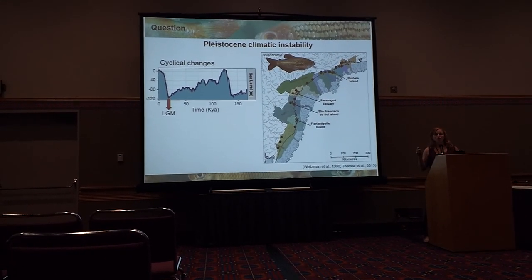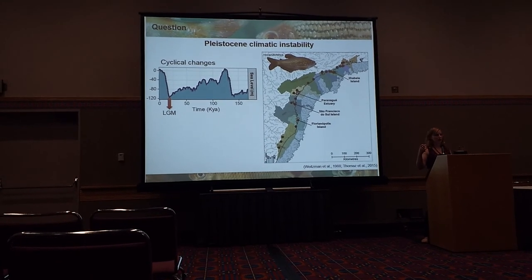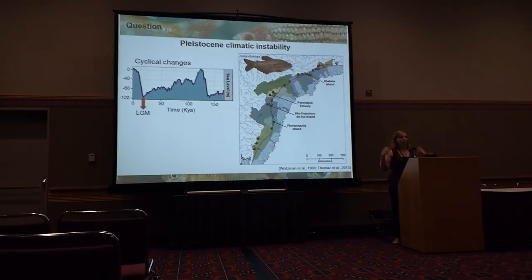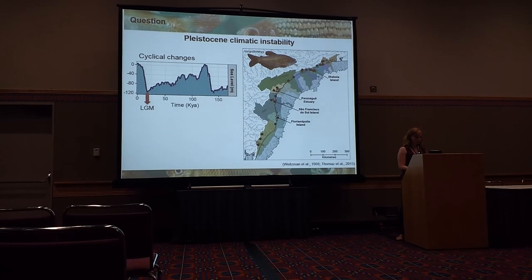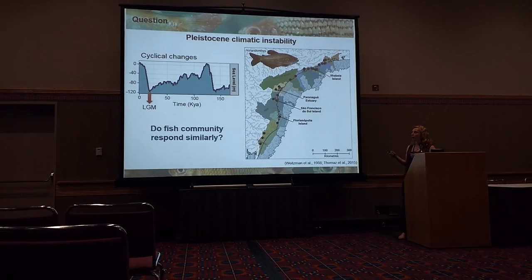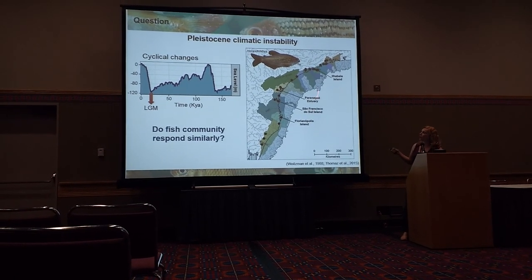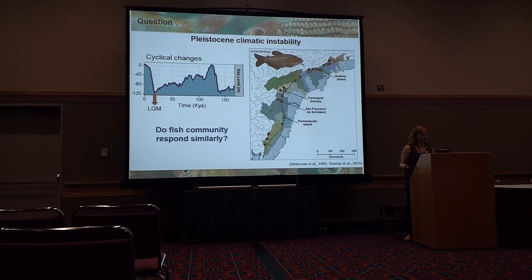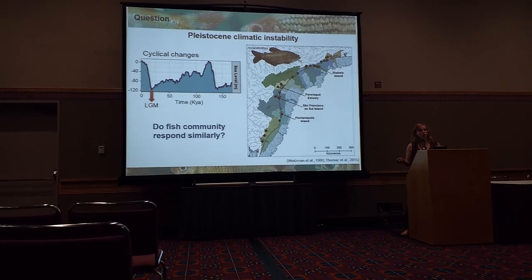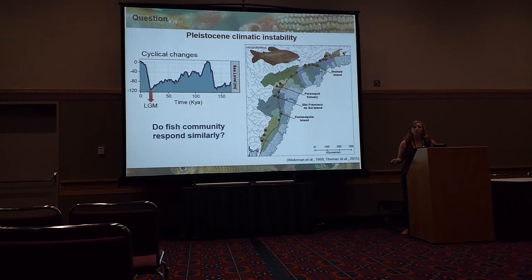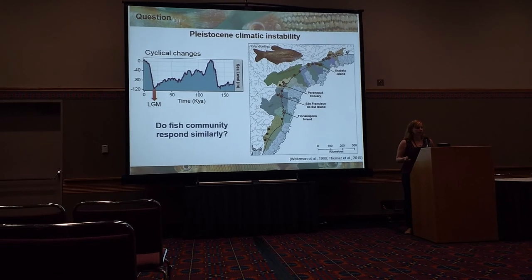So we have contrasting results here. We see that there are cyclical changes, which should involve a lot of ephemerality. But at the same time, we have a very strong pattern of genetic differentiation for one species. So I would like to test: does the fish community respond similarly in this area?